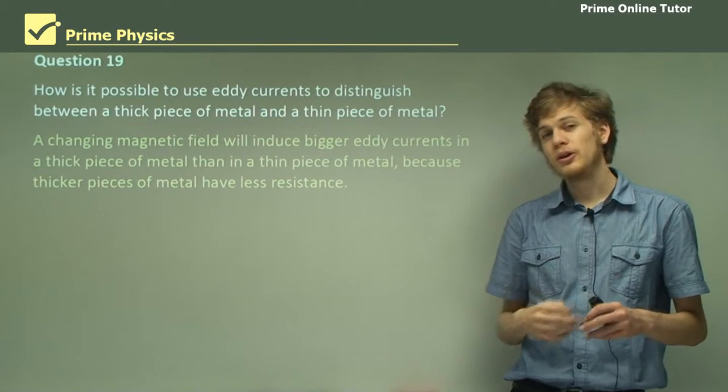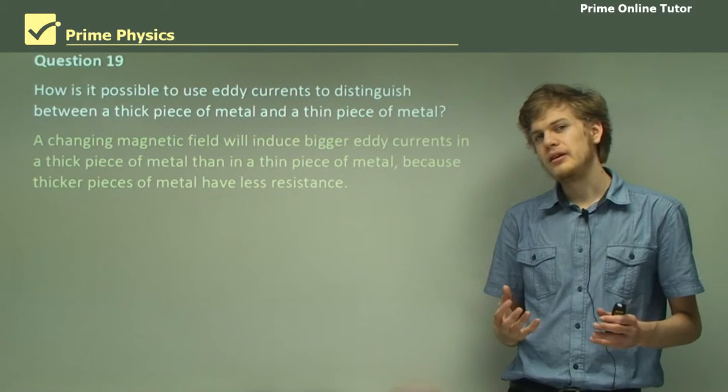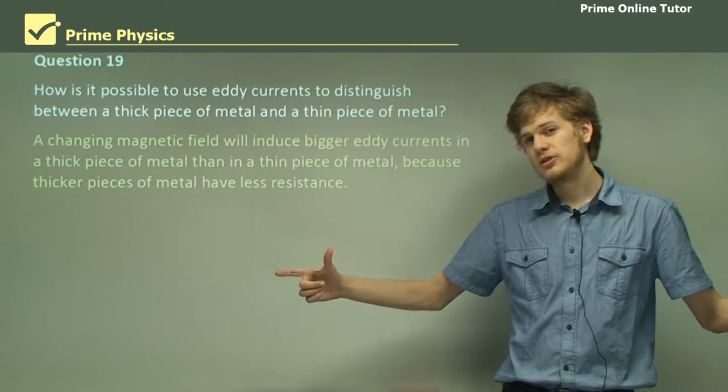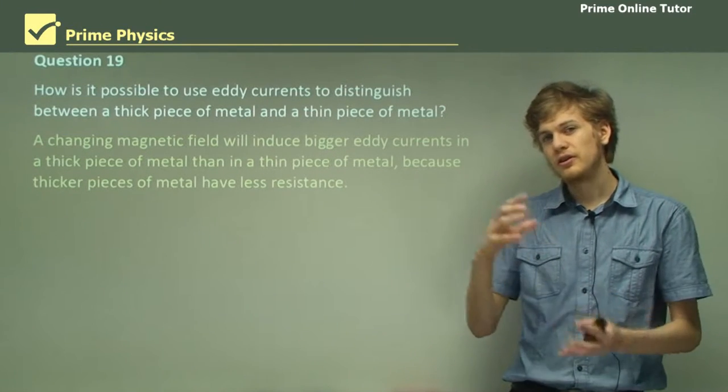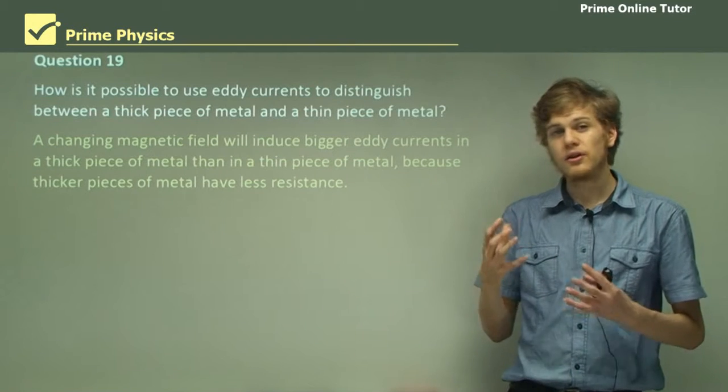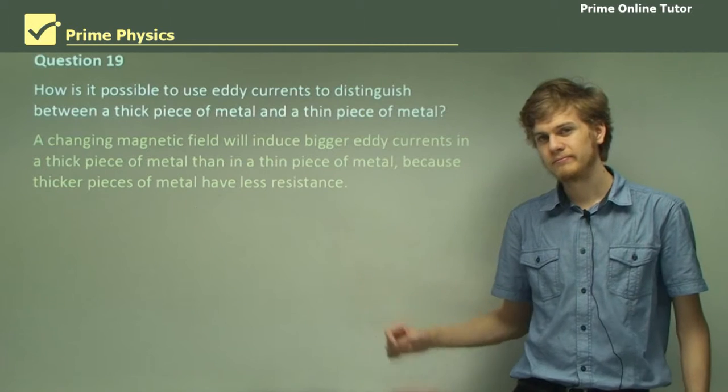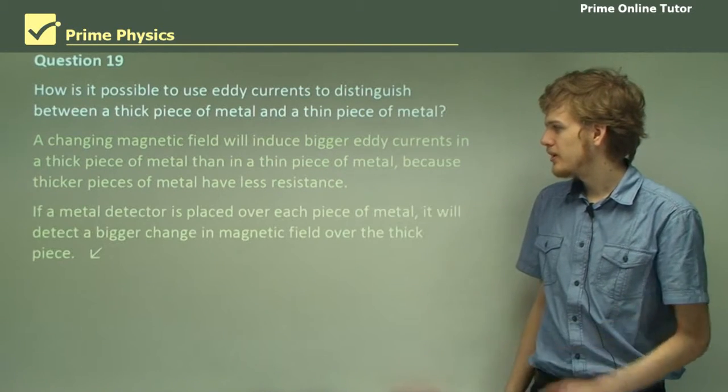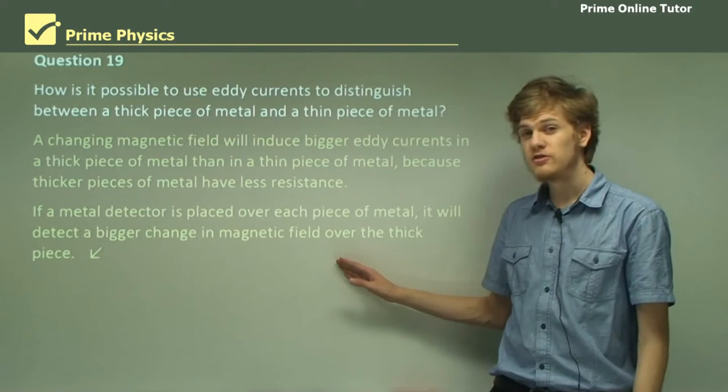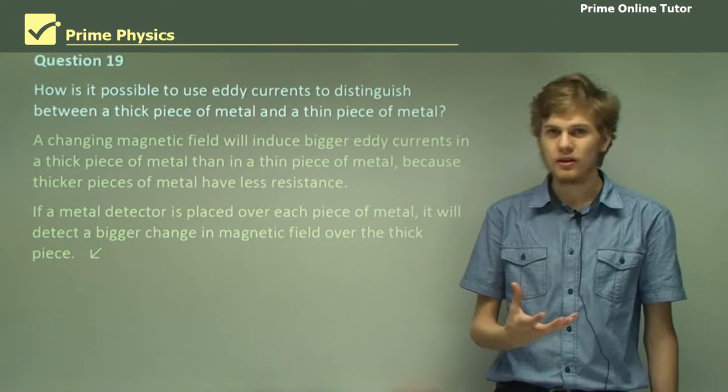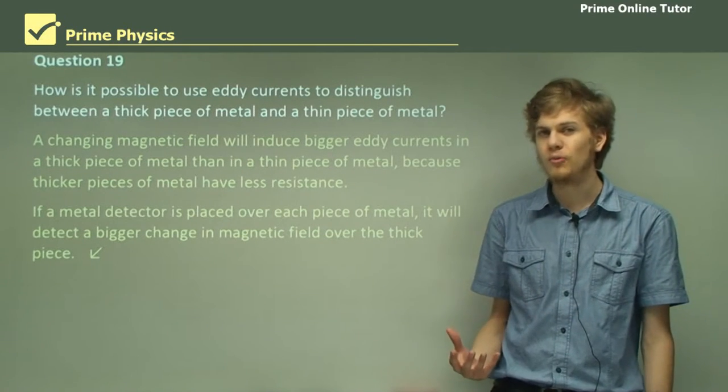Remember that if we look at a resistor, the resistance is proportional to the length but inversely proportional to the thickness. So the thicker the conductor, the less its resistance and the greater the eddy currents. If a metal detector is placed over each piece of metal, it will detect a bigger change in magnetic field over the thicker piece of metal than over the thinner one.